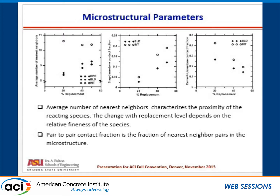These two factors are important microstructural parameters to understand early age hydration. As we increase the percentage of total replacement — that is, as we increase the slag content — the slag-limestone contact fraction goes up. We find significant differences between the interground and the blended mixtures. The reason is that although interground cement has the same amount of limestone content as the blended ones, the limestone in interground cement is much finer: the median size of C595 is 10.02 microns versus 11.2 microns for C150. Additionally, limestone being a softer phase grinds much finer during processing.